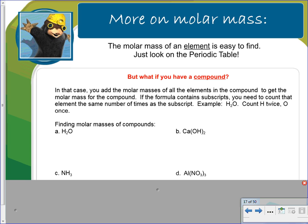We talked before about the mass of an element — where to find the molar mass of an element — and we know it's from the periodic table. But what if you have a compound? In that case, you add up the molar masses of all the elements in the compound to get the molar mass for the compound. If the formula contains subscripts, you need to count the element the same number of times as the subscript.